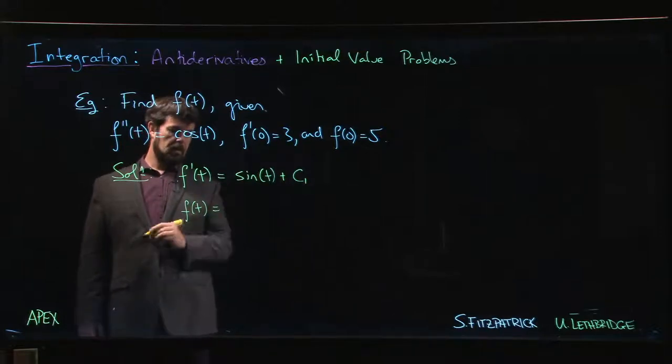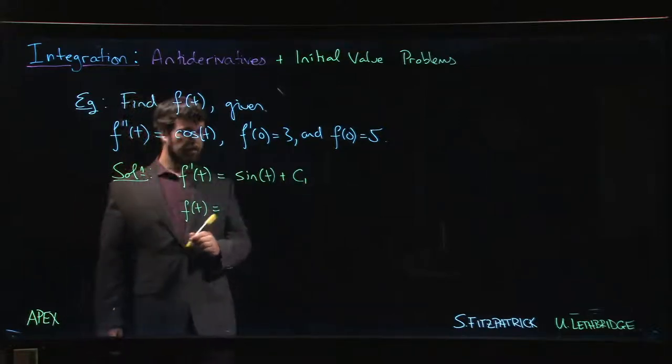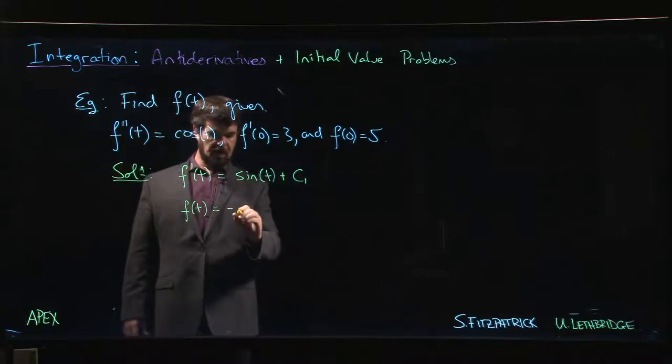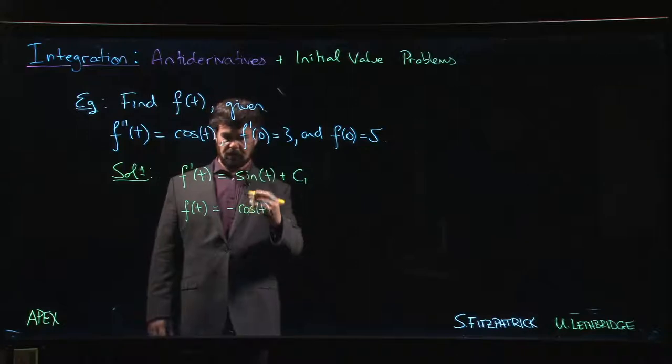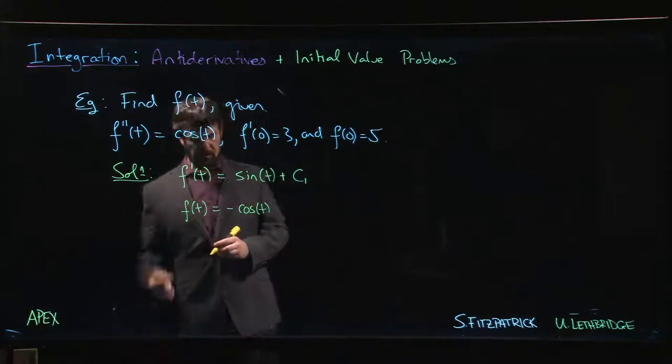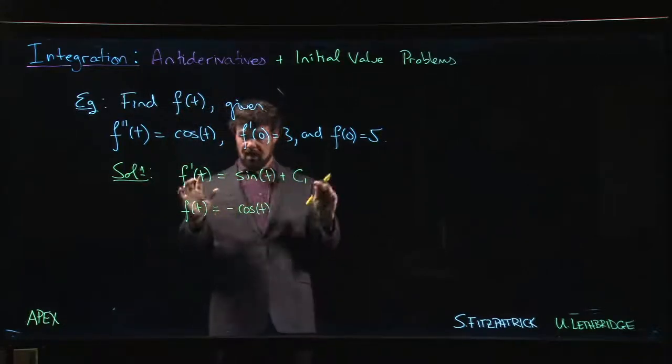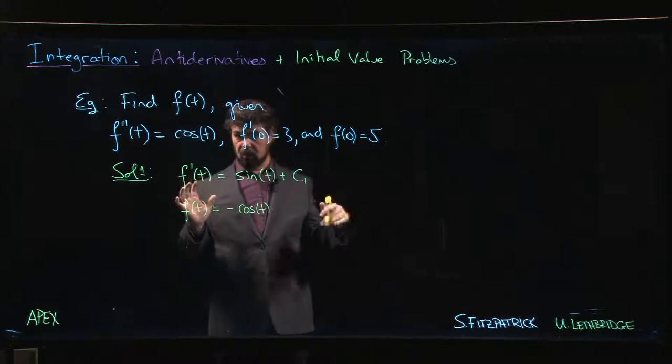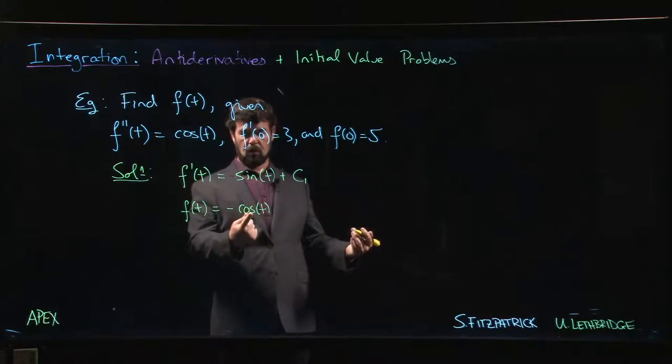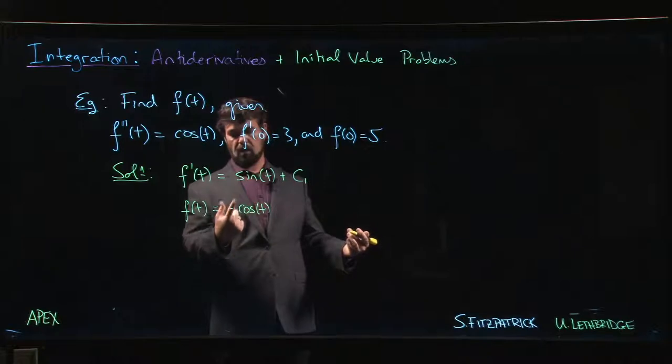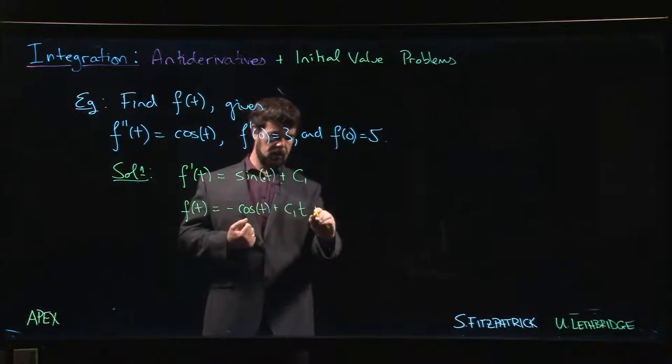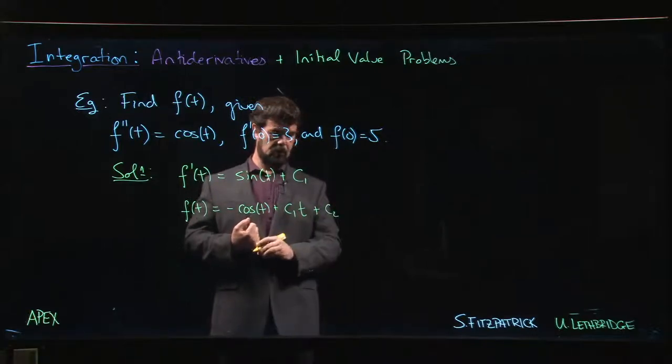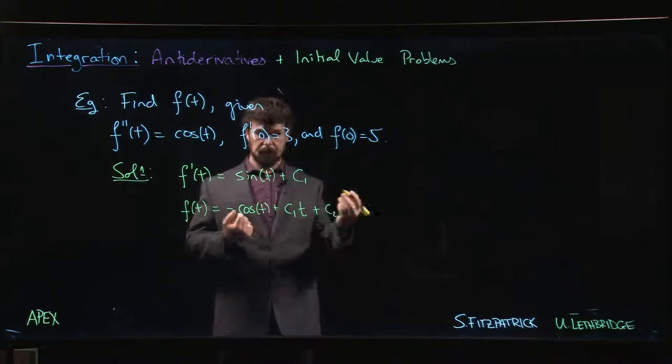f of t is equal to, well, the derivative of sine, we've seen that one. It's negative cos, antiderivative, right? Antiderivative of sine is negative cos because working backwards. Remember the nice thing about antiderivatives, you can always check your work. Just take the derivative. Derivative of cos is negative sine times negative one gives me positive sine, right? c1 times t plus c2, some new constant, c2.